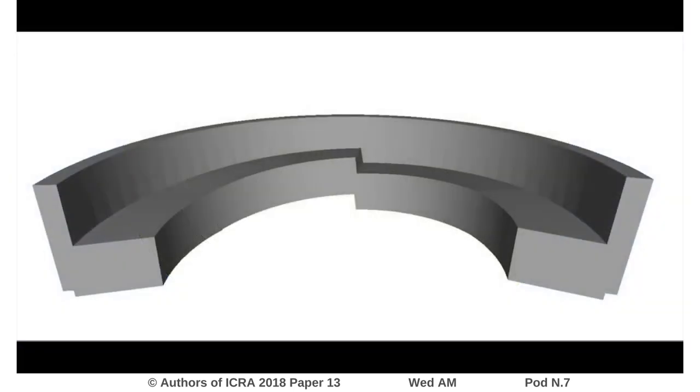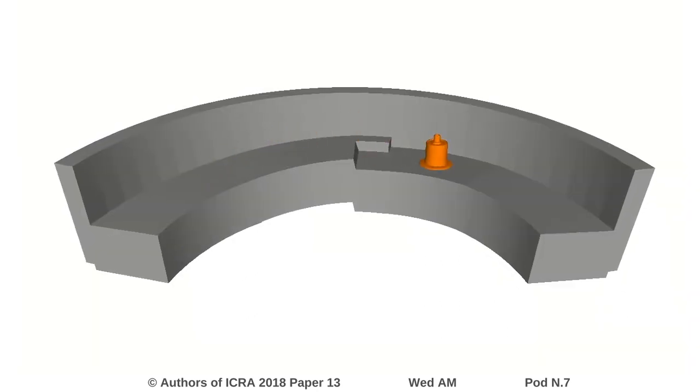In each iteration of the optimization, an experiment is conducted with a specific geometry variation of the trap. Here, the potential best geometry variation or parameter set is chosen based on the upper bound of the confidence interval. An experiment covers a simulation of a single part being vibrated across the trap. This results in either that the trap has the desired effect on the part or that it does not. This success or failure is the only feedback to the learning algorithm.